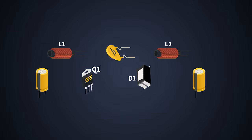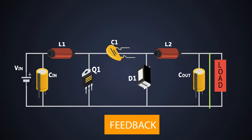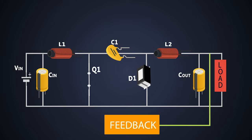The Ćuk converter is named after Dr. Slobodan Ćuk, the inventor of the Ćuk converter. It is made of a MOSFET or an active switch, a diode, two inductors and three capacitors. The PWM pulses are given to the MOSFET which switches the MOSFET on and off, and that's how the output voltage is adjusted.